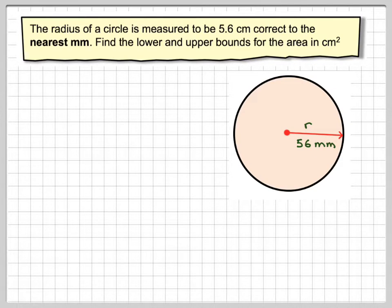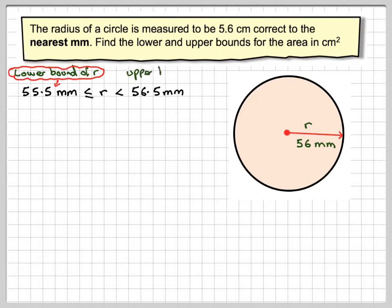Here we've got a circle with a radius. The radius is the distance from the center to the outside of the circle, of 56 millimeters, that's 5.6 centimeters in millimeters. The lower bound for that would be 55.5, and the upper bound would be 56.5.